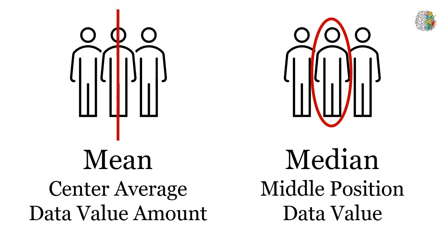The median is the data value that is in the middle position. This is going to vary depending on the frequency and spread of your data. Sometimes it's going to be exactly the same value as your mean, and other times it's going to be a little bit different. But it's always going to be the data point rather than the average.